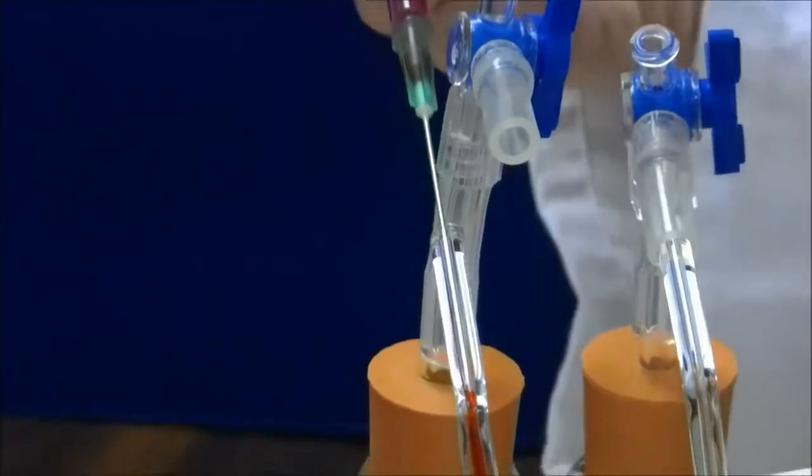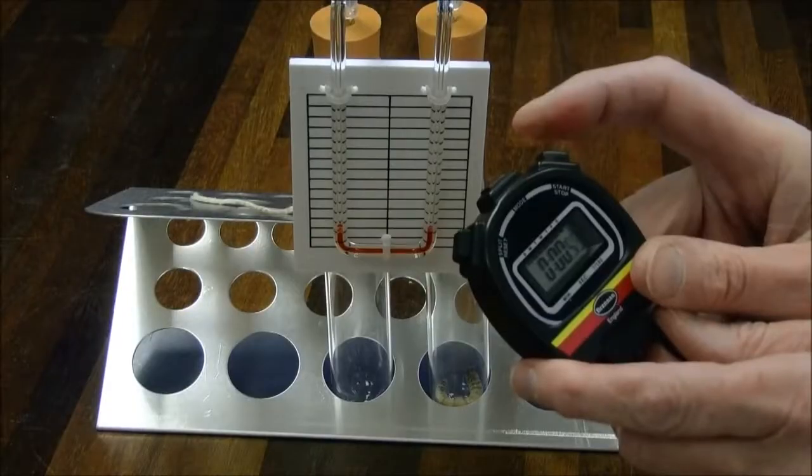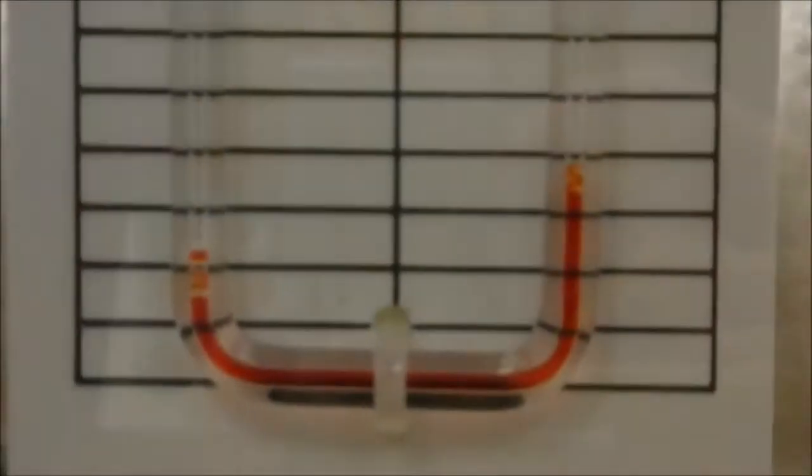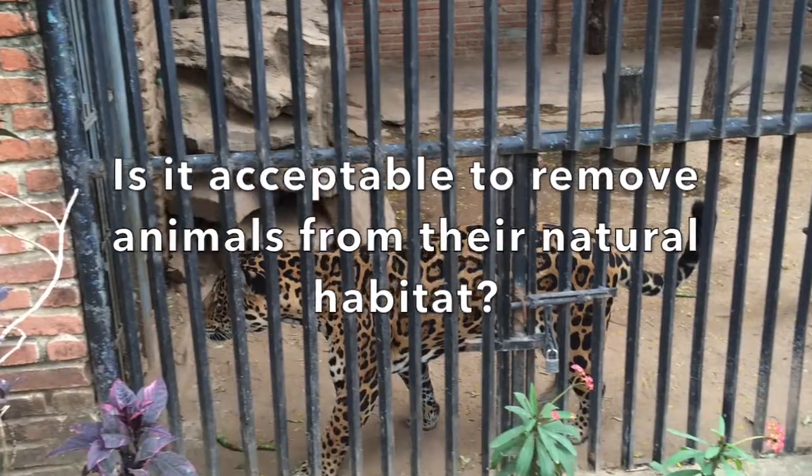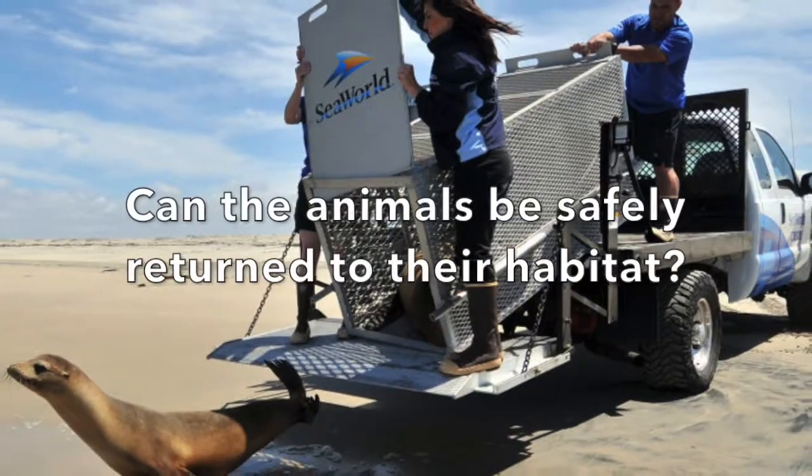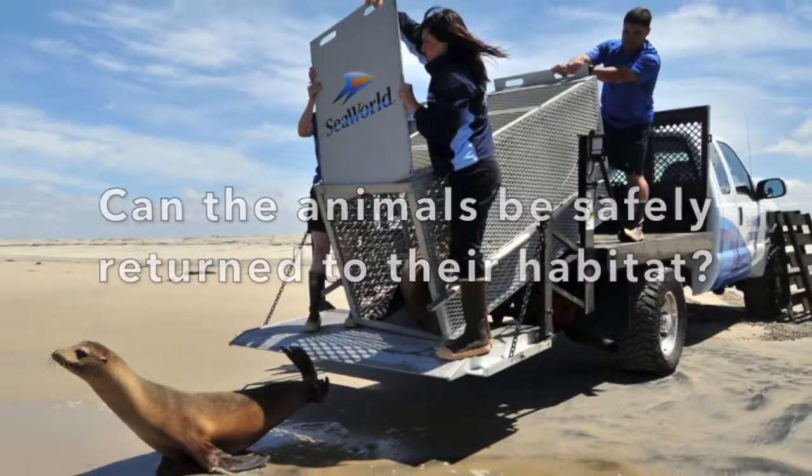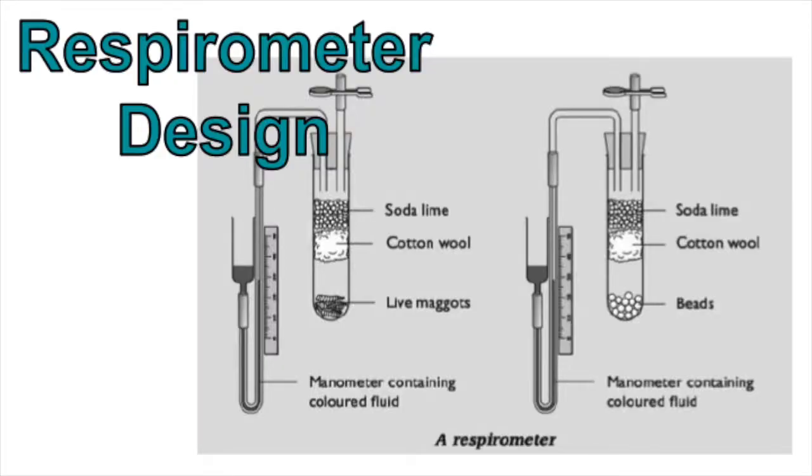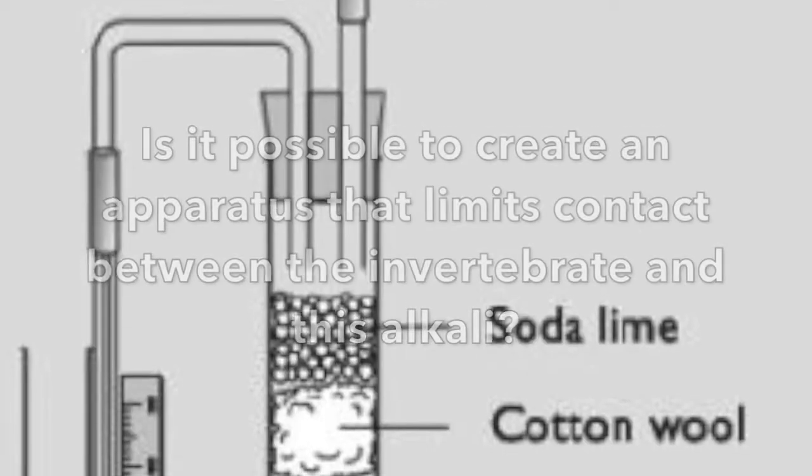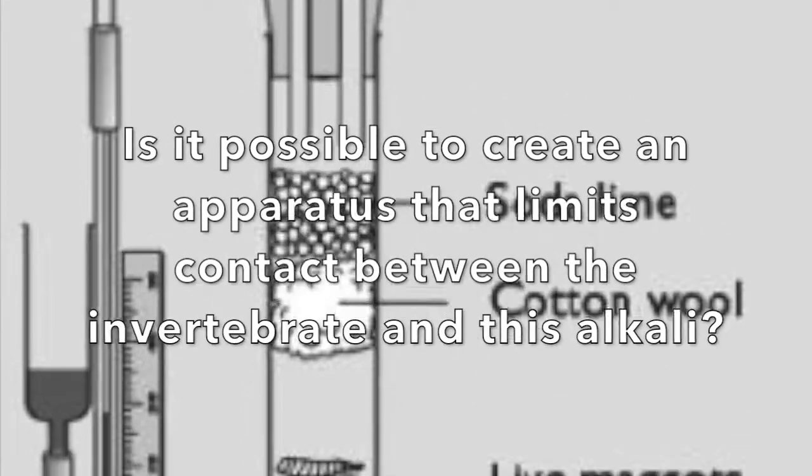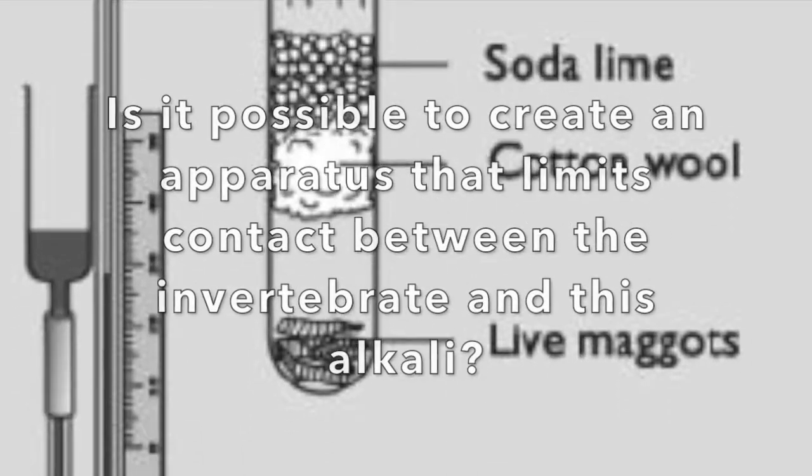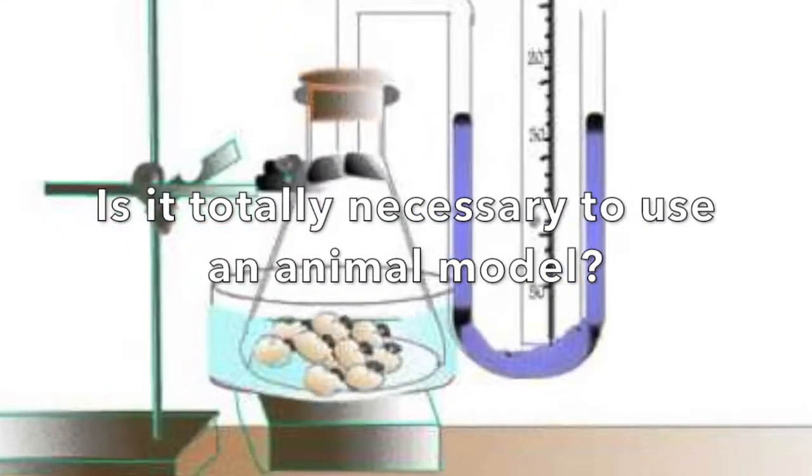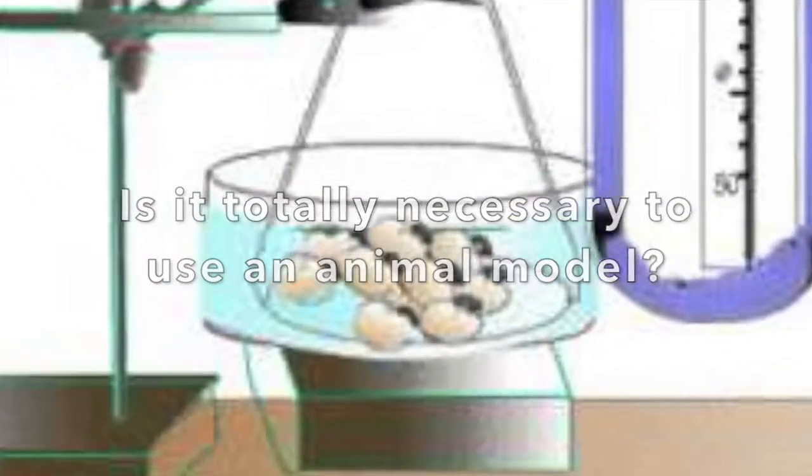If an invertebrate is used for this type of experiment, you must evaluate the ethics of using the model. Is it acceptable to remove animals from their natural habitat? Can the animals be safely returned to their habitat? Will the experiment cause pain or suffering? Part of a respirometer design is using an alkali to absorb CO2 and allow for measuring quantitative data. Is it possible to create an apparatus that limits contact between the invertebrate and this alkali? Lastly, is it totally necessary to use an animal model?